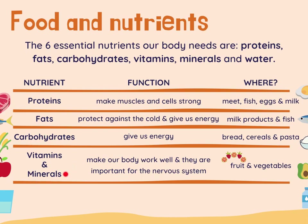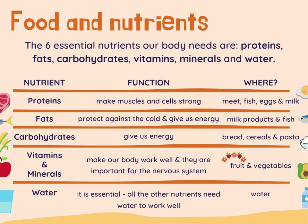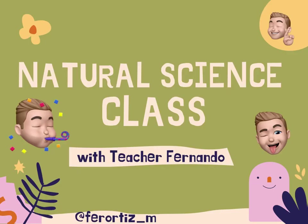Vitamins and minerals make our body work well and they are important for the nervous system. We can find them in fruits and vegetables. And at last, water — it is essential for our body. All the other nutrients need water to work well. That was all for this video. I hope you liked it and see you in the next video!